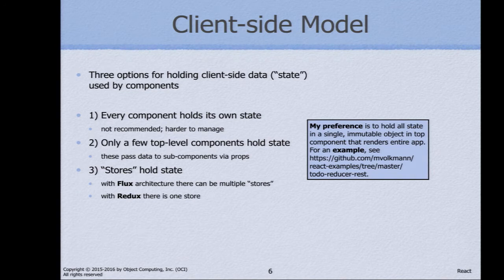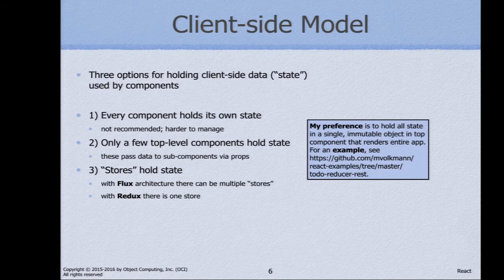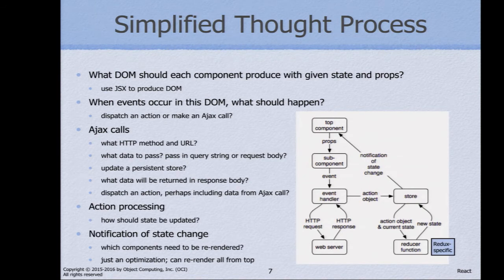In a very specific case where you hold all the state of your application in a single object — one tree of data — and only the topmost component owns that, it pushes data down to the components inside it. If you'd like to see an example of exactly that, go to my GitHub repo and look for todo-reducer-rest. You'll see the kind of example that I think is the simplest way to use React.